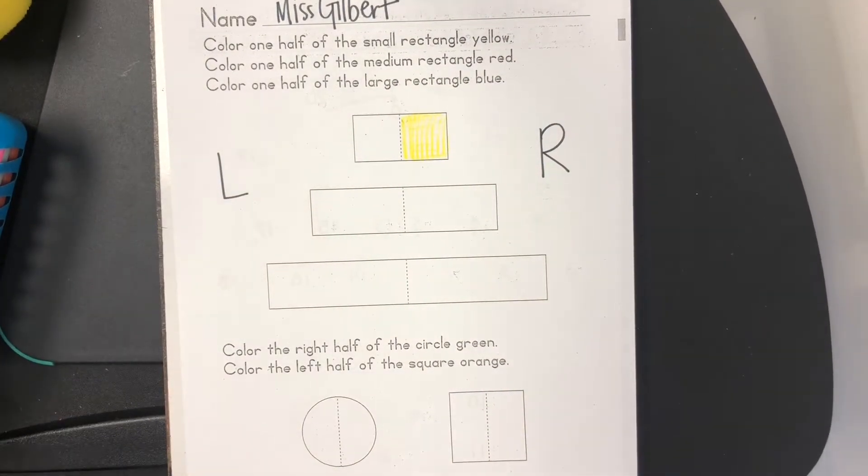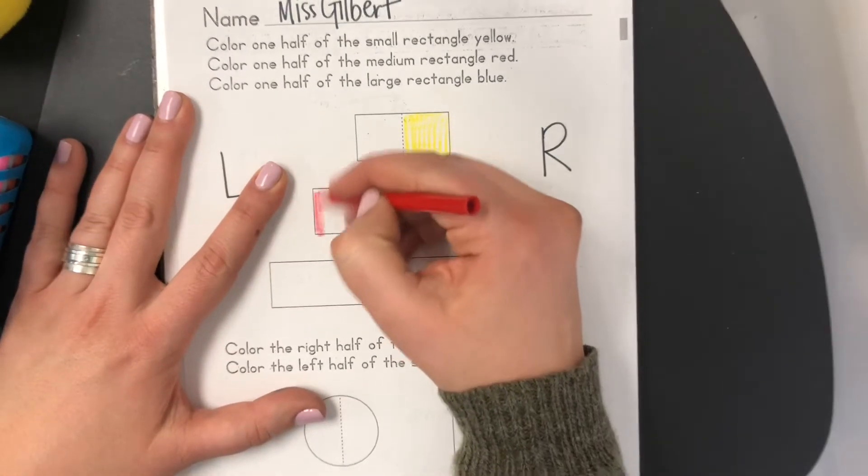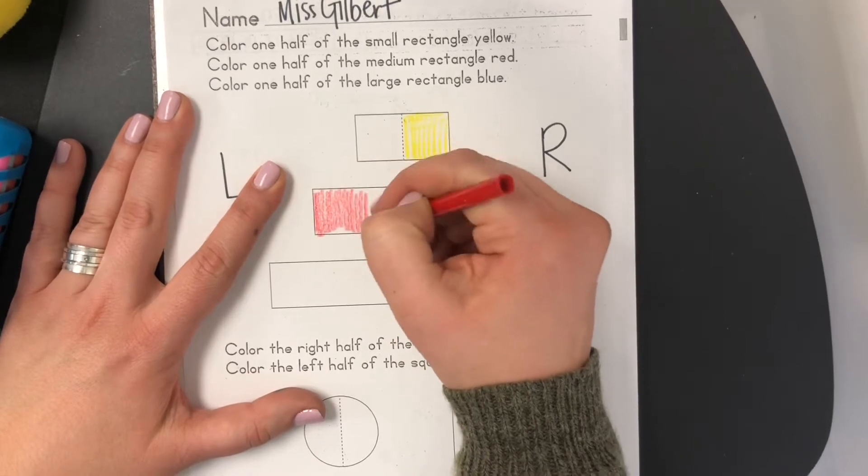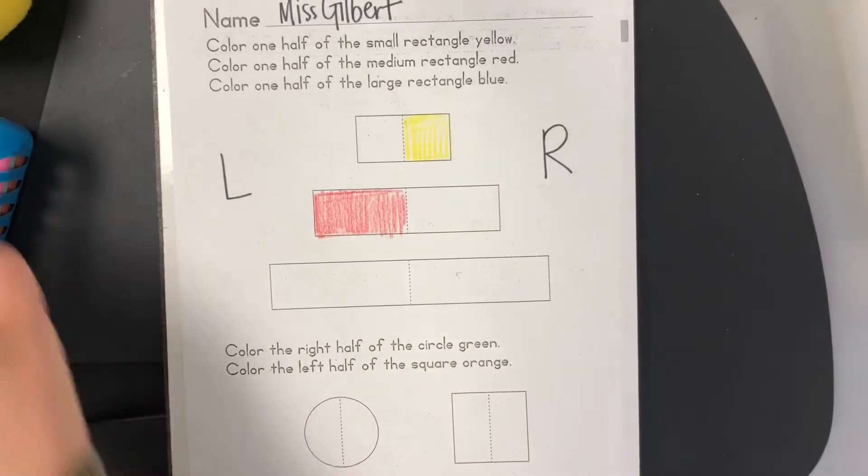Color one half of the medium rectangle red. Color one half of the large rectangle blue.